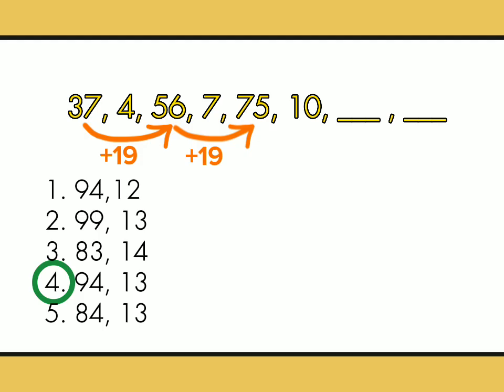May pattern na tayo. Kung dito ay plus 19, at plus 19 din dito, so dito ay plus 19 din. At alternate pa din. So, 75 plus 19 is 94. May isang sagot na tayo. Though alam na natin ang tamang sagot dito, gusto ko lang elaborate para mas maintindihan. It is my purpose kasi na sagutan ko muna bago ako mag-explain.